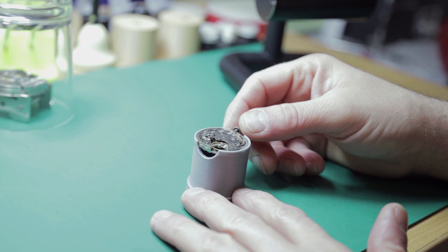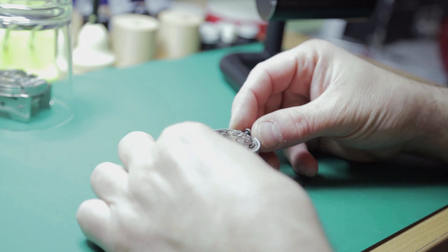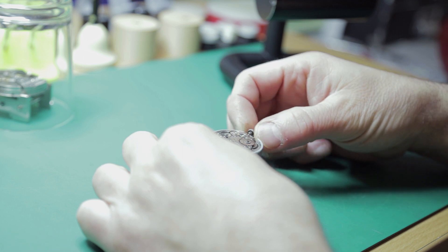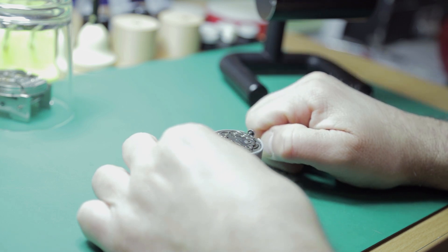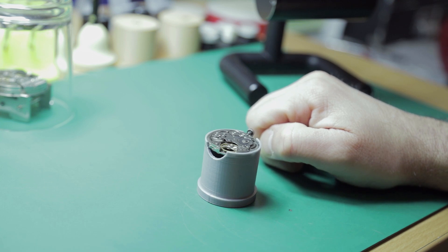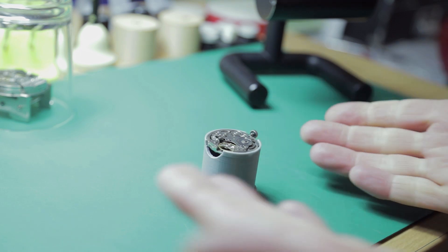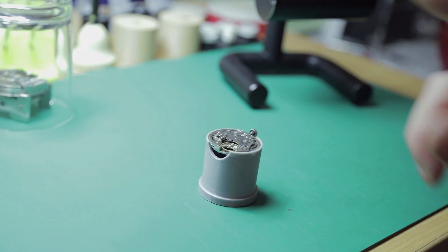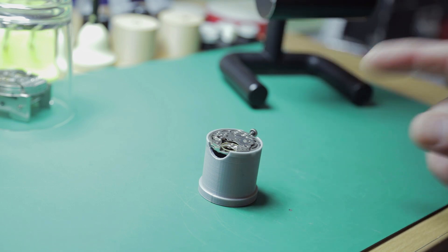So without further ado, let's hop over to the bench. We'll take a look at the movement and we'll pop that on the time grapher and see what results we get. So down here on the bench we've got the Seiko Belmatic movement as you can see. And this one's a little bit tired and is getting a bit of TLC and has a bit of a lackluster amplitude,